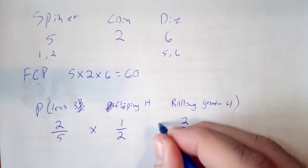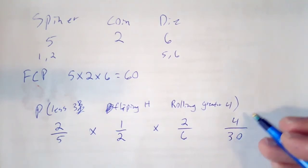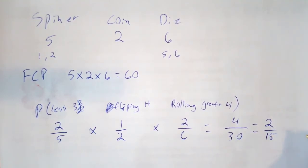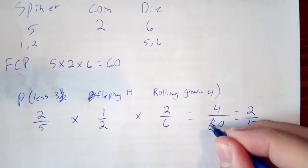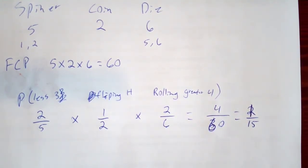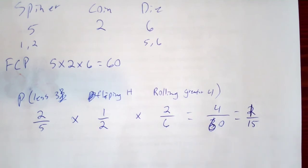I'm going to multiply all of these probabilities together. 2 times 1 times 2 gives me 4. 5 times 2 times 6 gives me 60. 4 over 30, which reduces down to 2 over 15. I'm sitting here looking at my math, wondering what I did wrong. So we have a 1 in 15 probability of this event happening, of less than a 3 on a spinner, flipping the heads, and rolling a greater than 4. We can multiply our probabilities for 3 different events happening and figure out our overall probability happening.